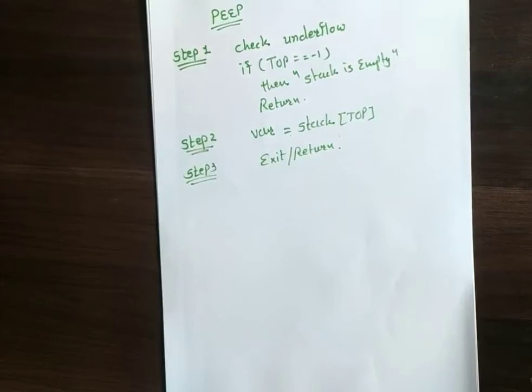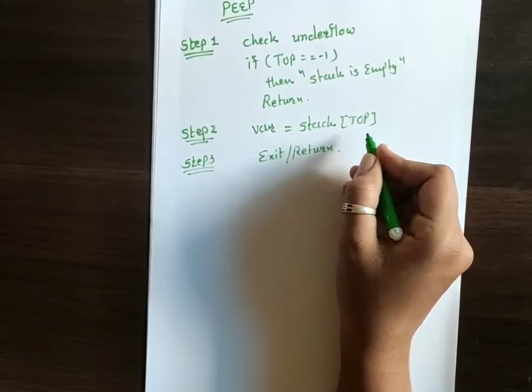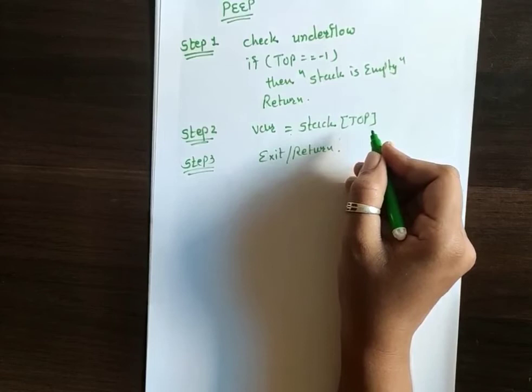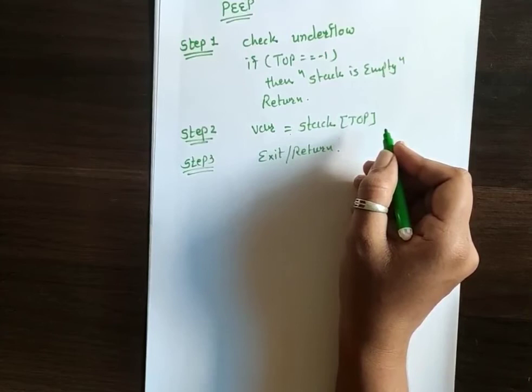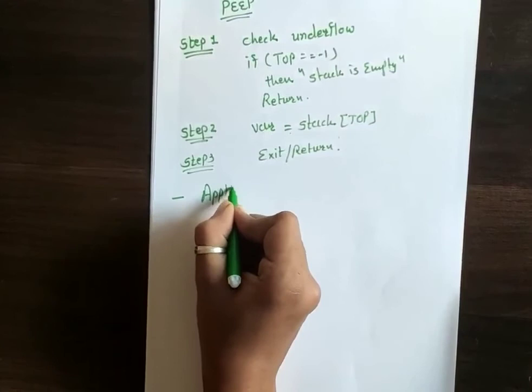There is only one minor difference between pop and peek: we are not deleting any element in the peek operation, whereas in the pop operation we are deleting the topmost element by decrementing the top. So these are the basic algorithms of stack: push operation, pop operation, and peek operation. Now if I talk about the applications of stack.